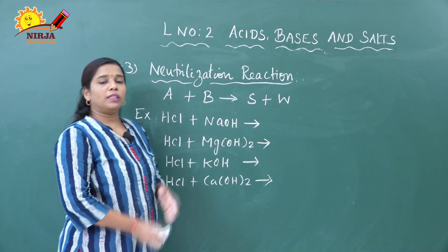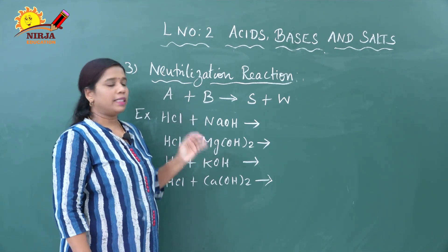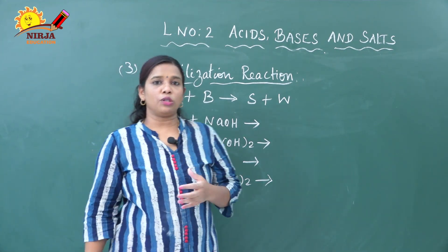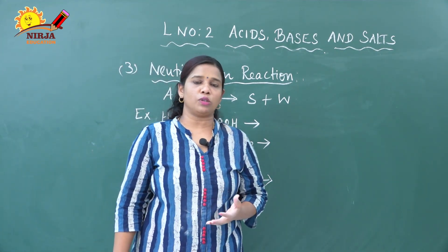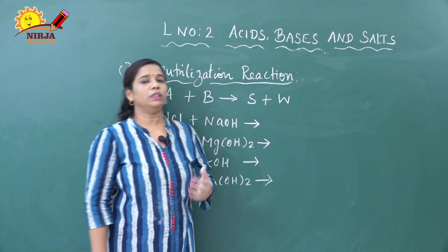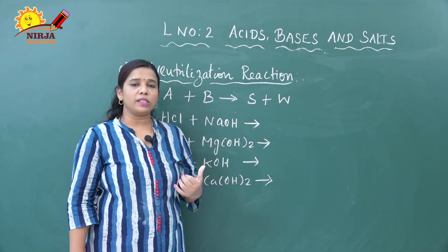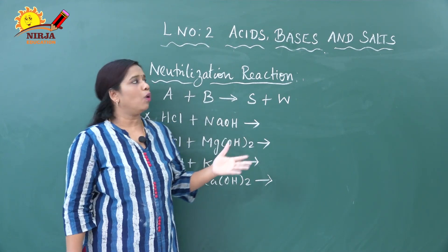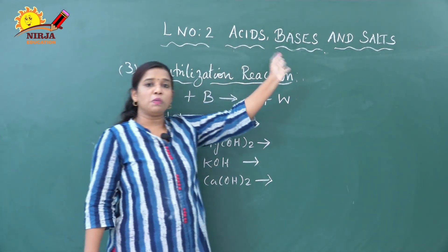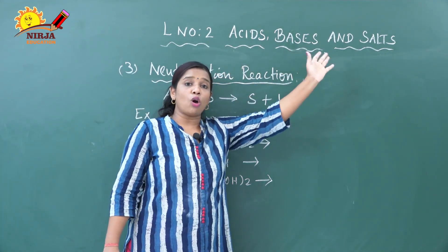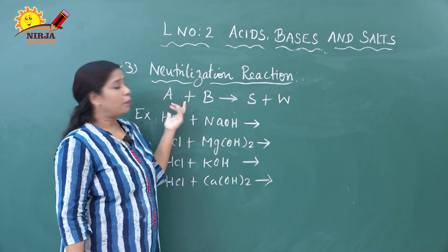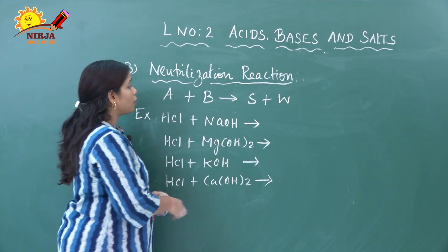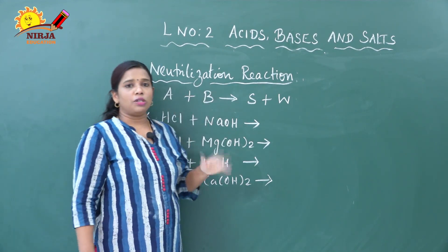We are going to discuss about the third chemical property of an acid — that is called a neutralization reaction. What is meant by neutralization reaction? That is a very, very important question. Neutralization reaction is nothing but when the acid reacts with base, it produces salt and water. The salt is produced as a combination of acid as well as base. This process is called neutralization.